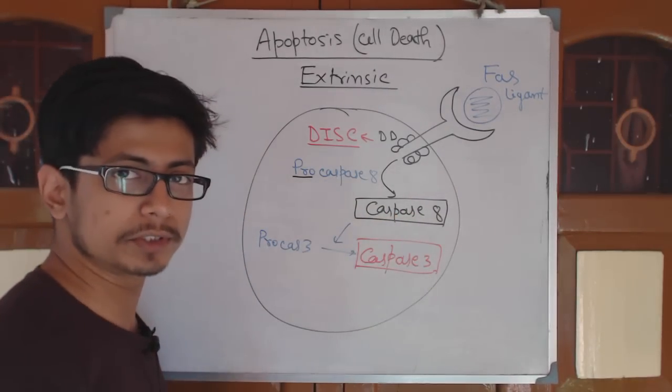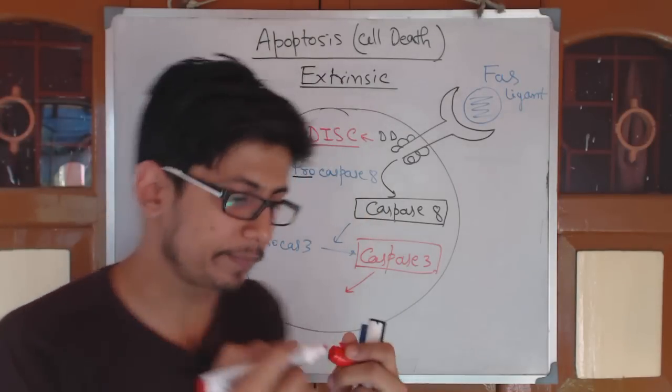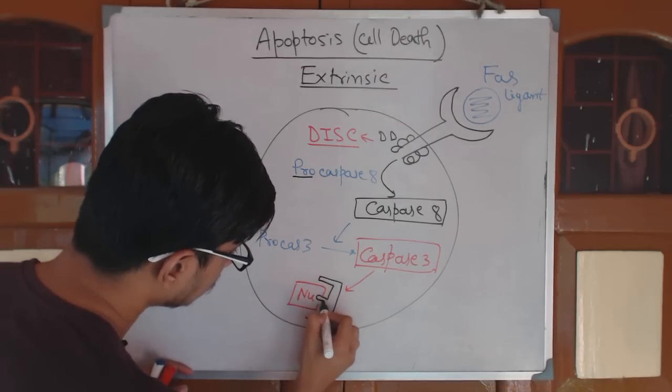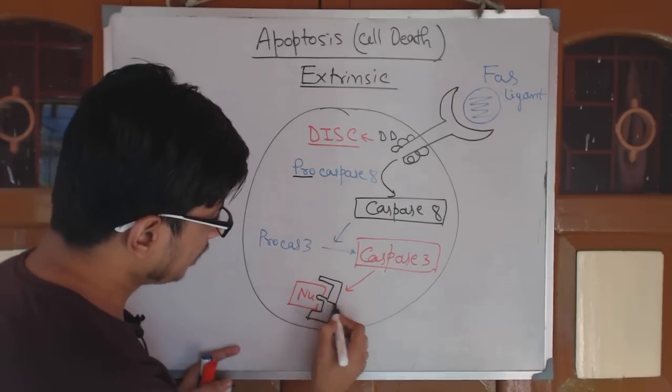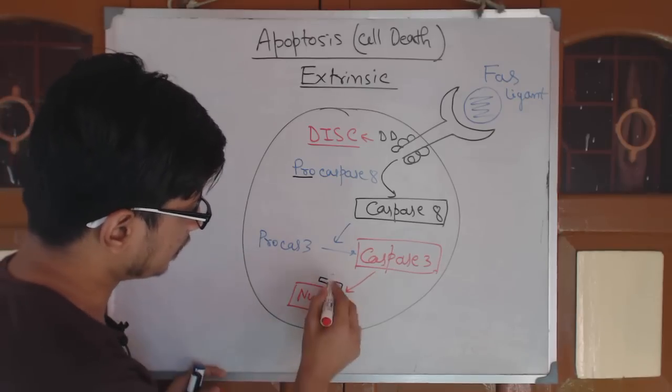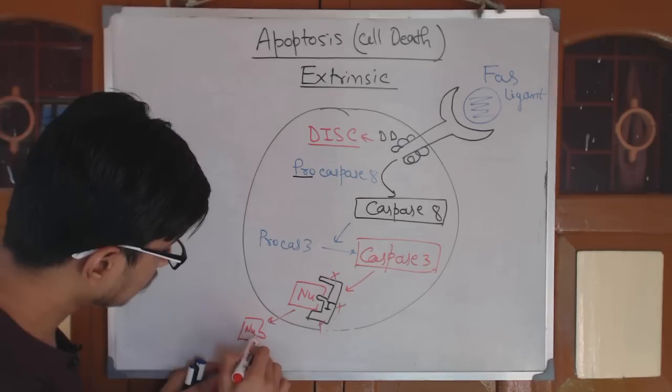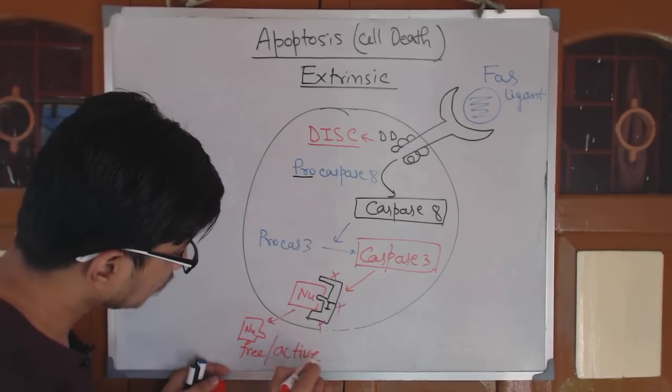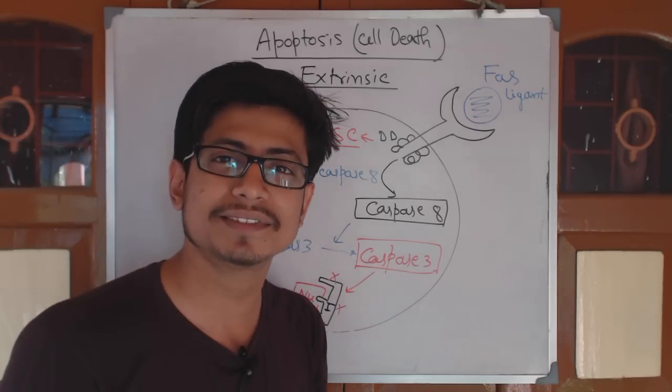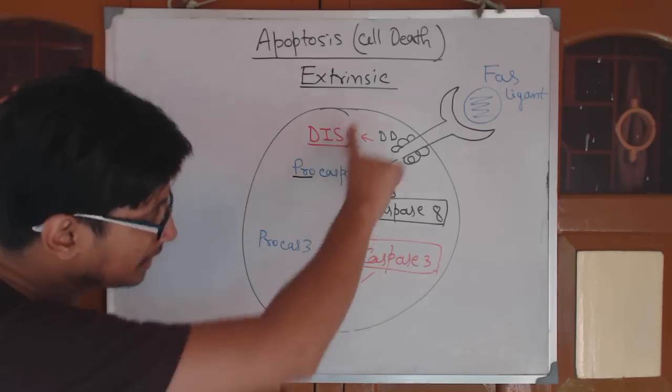Once caspase 3 is produced, caspase 3 can degrade the inhibitor that is holding on to the nuclease enzyme. There is a nuclease enzyme, but the nuclease enzyme is deactivated by this inhibitor. Caspase 3 can break down or degrade these inhibitors. Once caspase 3 degrades the inhibitor, the nuclease becomes free and active. Once nuclease is active, it can go inside the nucleus and start breaking down the nucleic acids, the chromosomes and DNA. It makes the cell die.